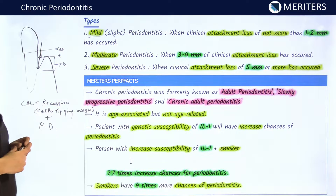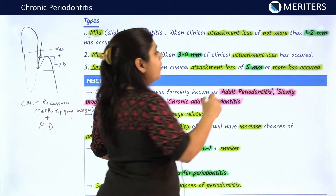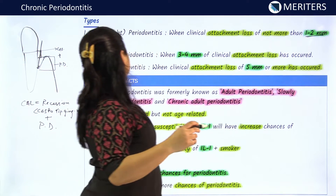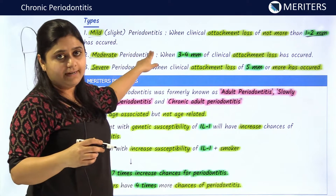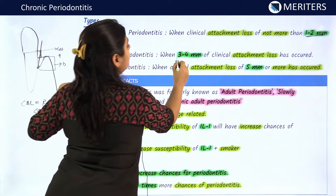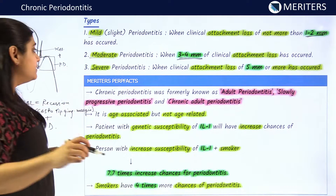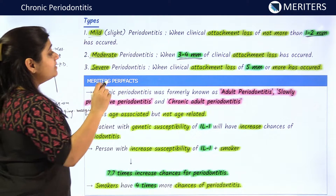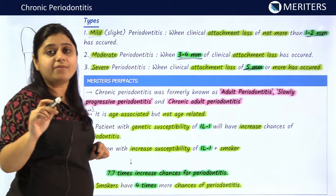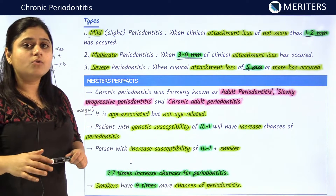If the clinical attachment loss is 1 to 2 mm, it is classified as mild or slight periodontitis. If the clinical attachment loss is between 3 to 4 mm, it is known as moderate periodontitis. And if the clinical attachment loss is more than 5 mm, it is classified as severe form of periodontitis.